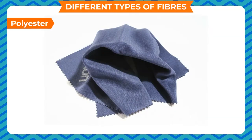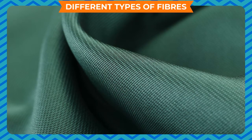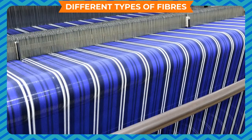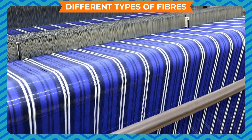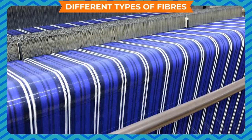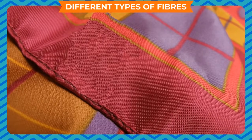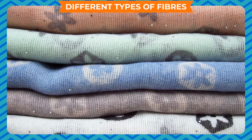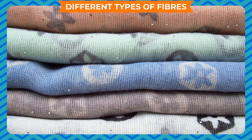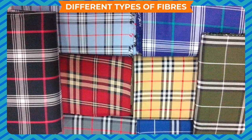Polyester is a long chain polymer composed of approximately 85% ester, a dihydric alcohol and a terephthalic acid. Polyester is an extremely strong fabric. It is durable, chemical, shrinking, wrinkle and abrasion resistant. It is hydrophobic in nature. It can be easily washed and dried, and can be used as a good insulating material.